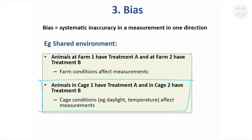The same thing applies to cages. If you have all the animals having one treatment in one cage and all having another treatment in another cage, you might want to consider that cage conditions — for example, the temperature or the amount of daylight they get — are going to affect the measurements and bias your results.